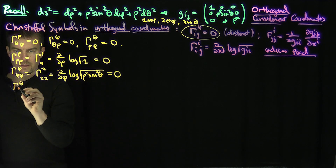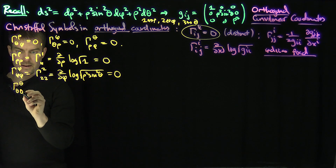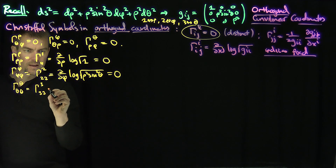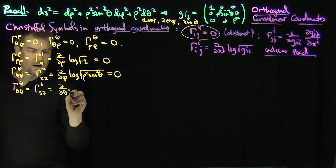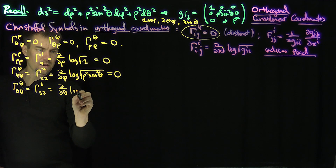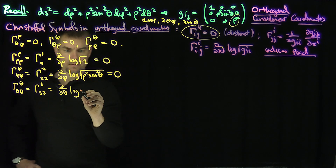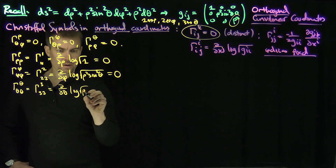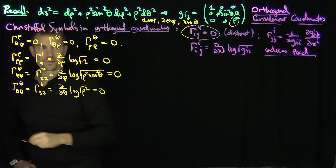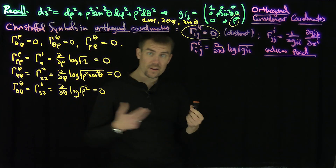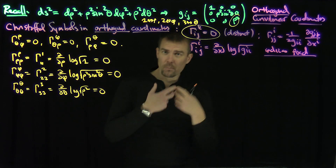γ^(θ,θ,θ) = γ^3_33 is the θ-derivative of log of the square root of the (3,3) entry, which is ρ². The square root of ρ² has no θ-dependence, so this is also 0. All three of those Christoffel symbols are equal to 0.